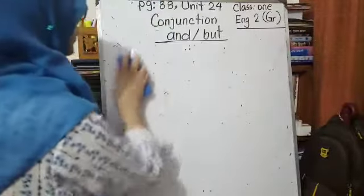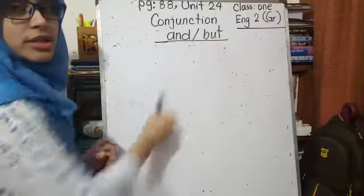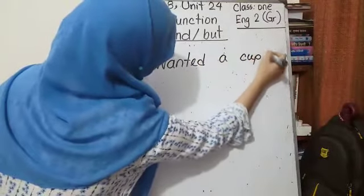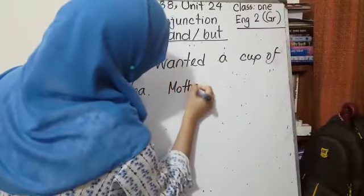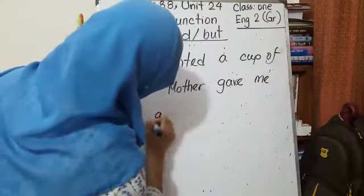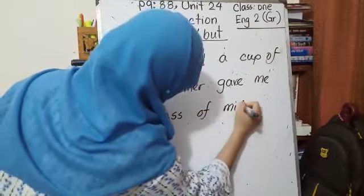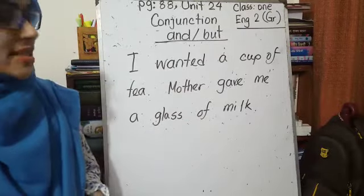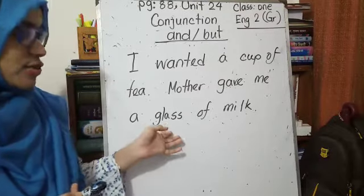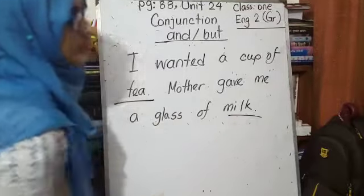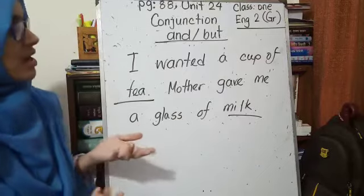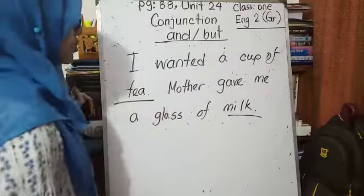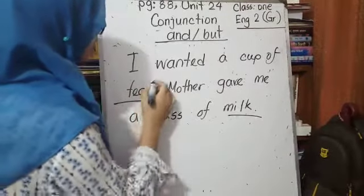Now we will work on something where we will use the conjunction 'but'. For example: I wanted a cup of tea, but mother gave me a glass of milk. You wanted something and your mother gave you something else. So: I wanted a cup of tea but mother gave me a glass of milk. Are they similar? No, because you wanted tea but you got milk. Both are useful for you and good for your health, but they are not the same. So here we will use the conjunction 'but'.